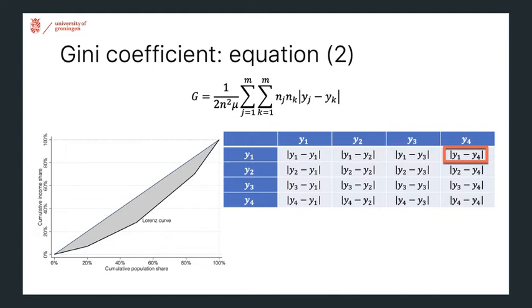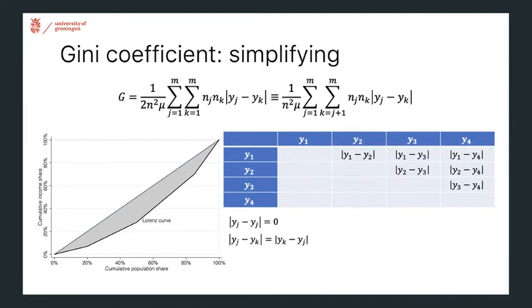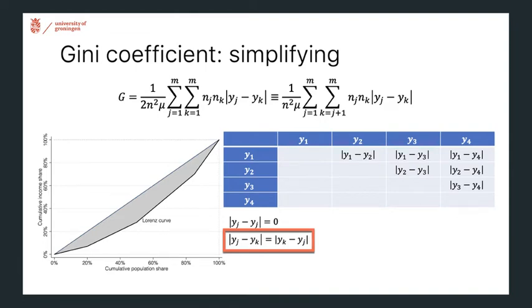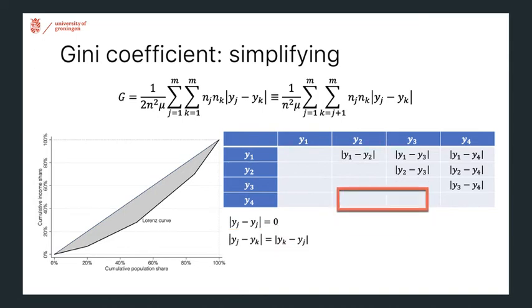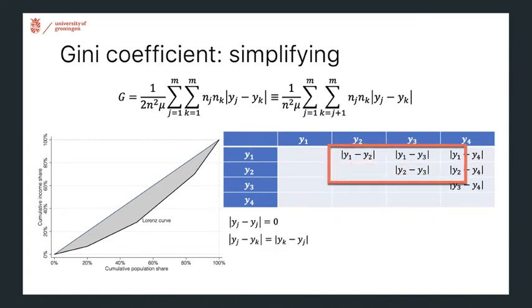We can simplify the calculation quite a bit by noting two features. First, the difference between each income group and itself is zero, so all diagonal entries are zero. Second, because we're looking at the absolute income difference, each off-diagonal entry is the same as its mirror — |Y1 − Y2| equals |Y2 − Y1|. So rather than computing a full four-by-four set of comparisons, you're left with only six income differences for four income groups.